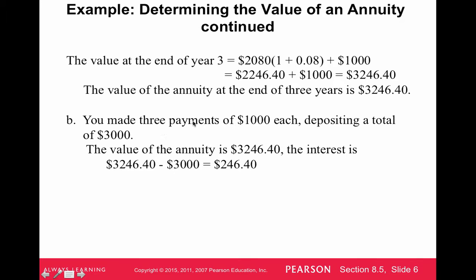Part B says find the interest. We made three payments of $1,000 each, depositing a total of $3,000. To find the interest, we figure out our total investment, which is the payment times the number of payments: 3 times $1,000 equals $3,000. Then the difference between the future value, $3,246.40, minus $3,000 gives us $246.40 in interest.